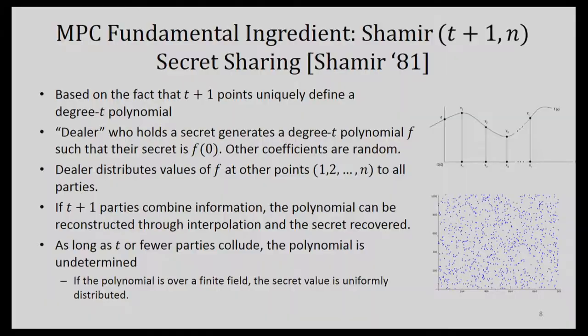If we use a finite field, the secret value is uniformly distributed — so that's as good as security can get. You can literally know nothing about which element of the field the secret is until you have t plus one people putting their data together.